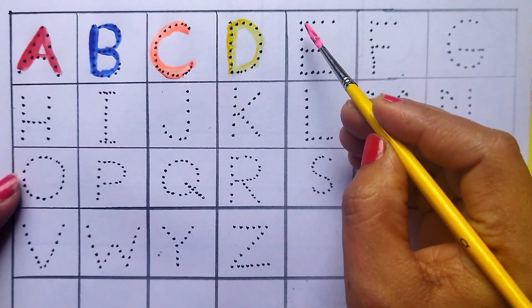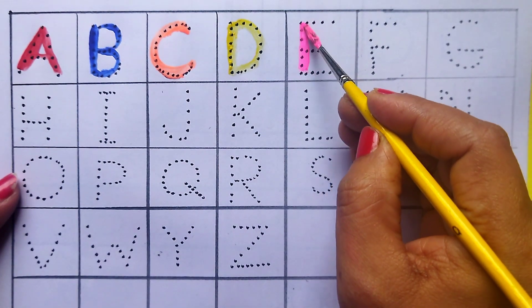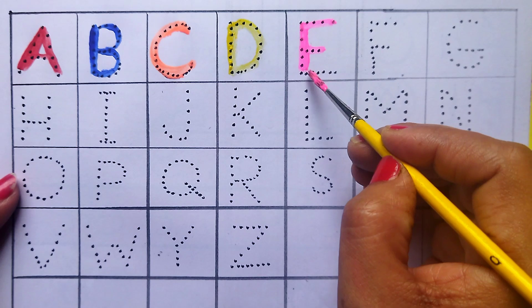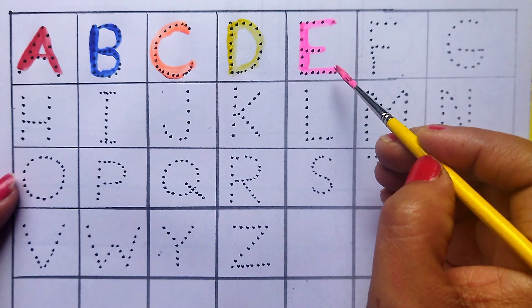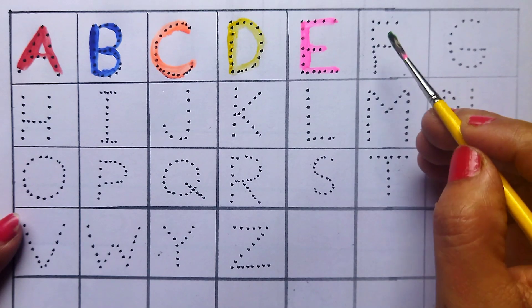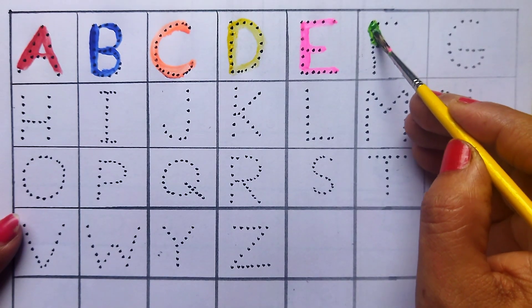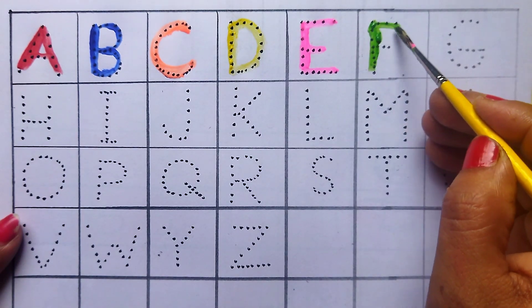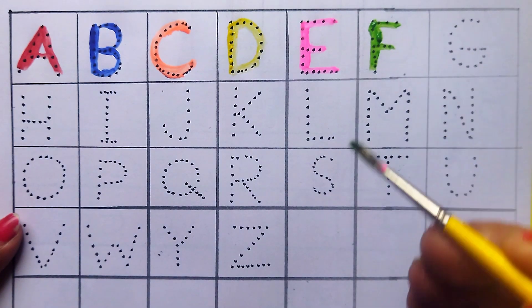Pink color. E. E for egg. Green color. F. F for fish.